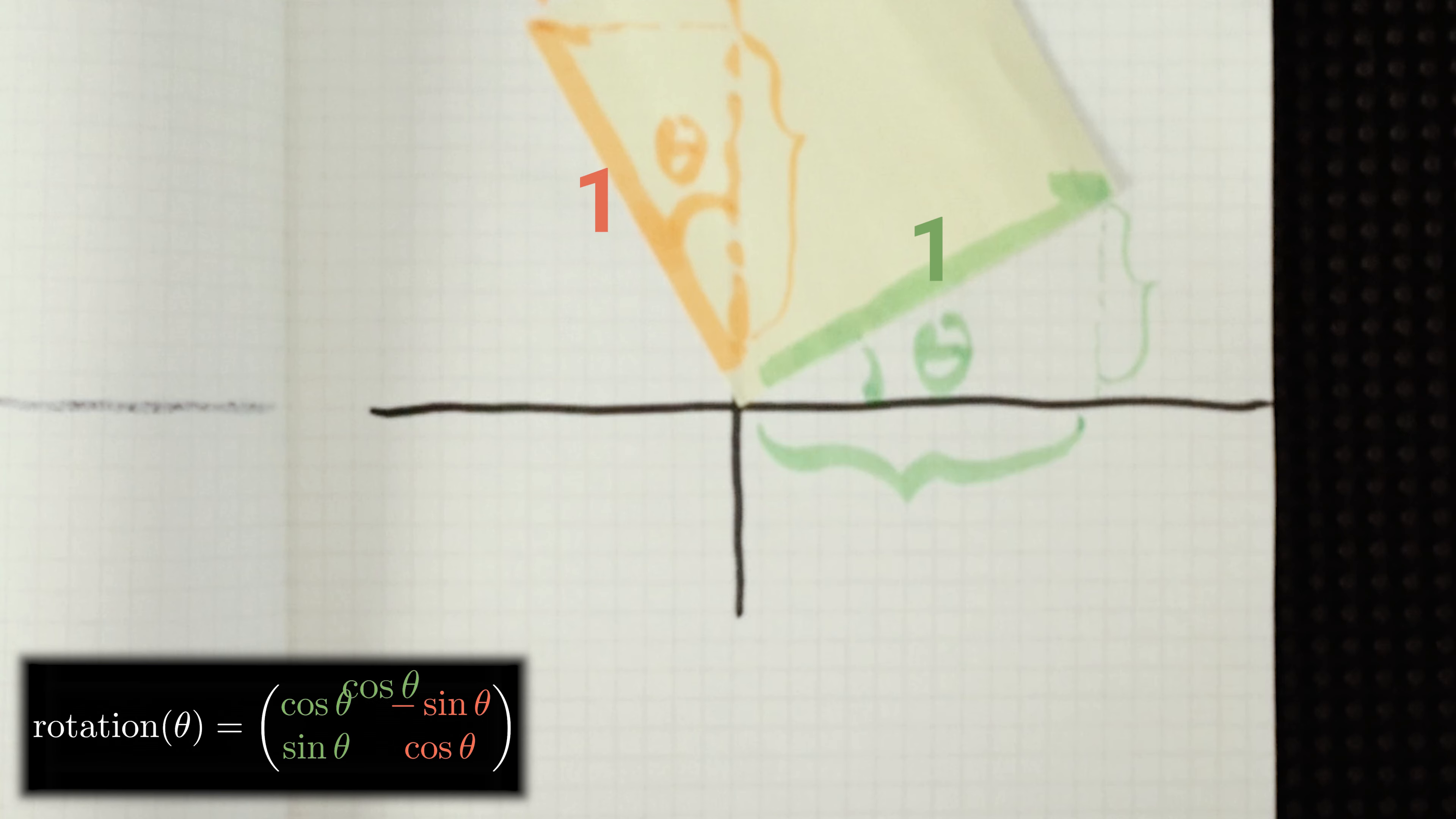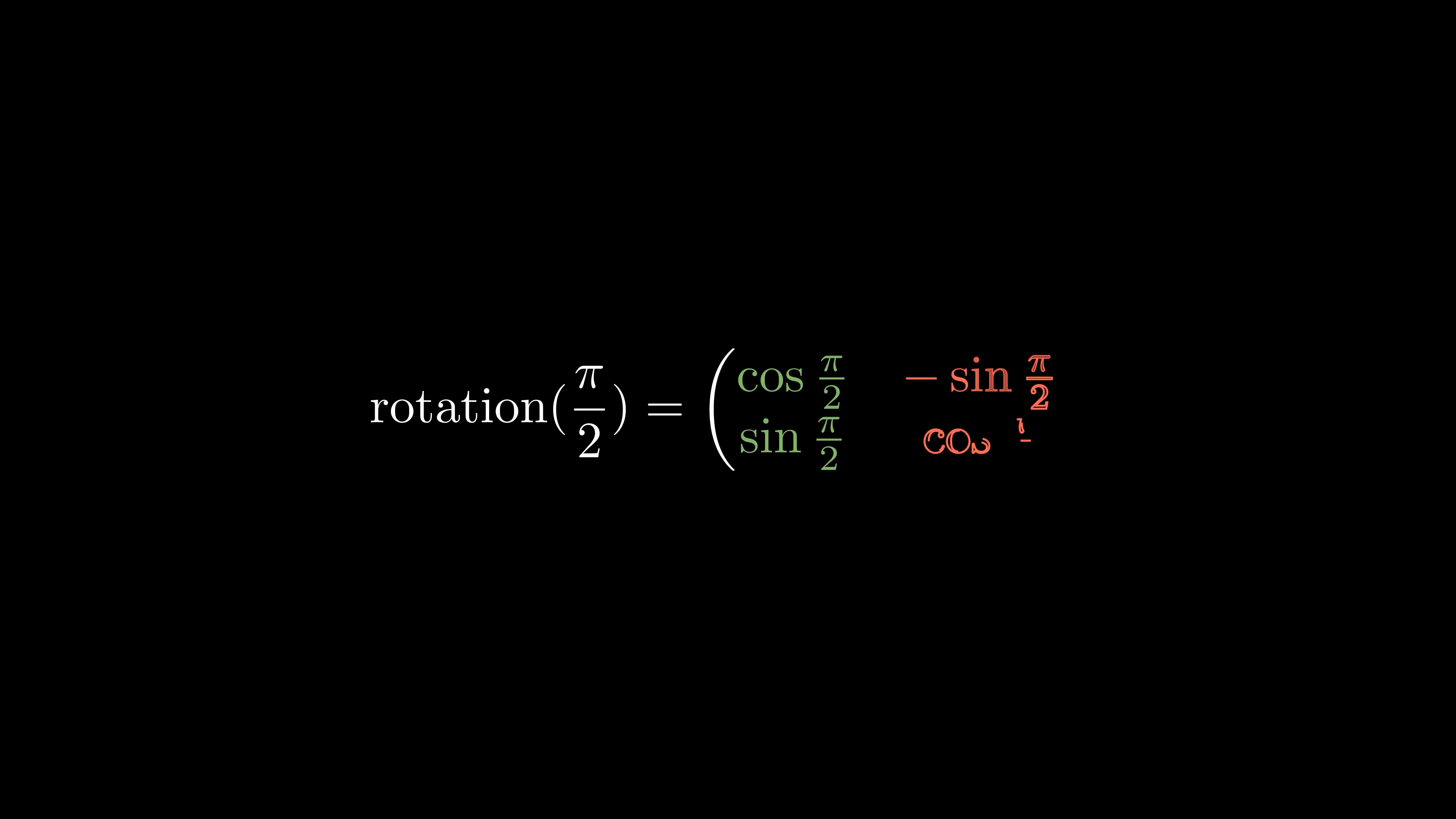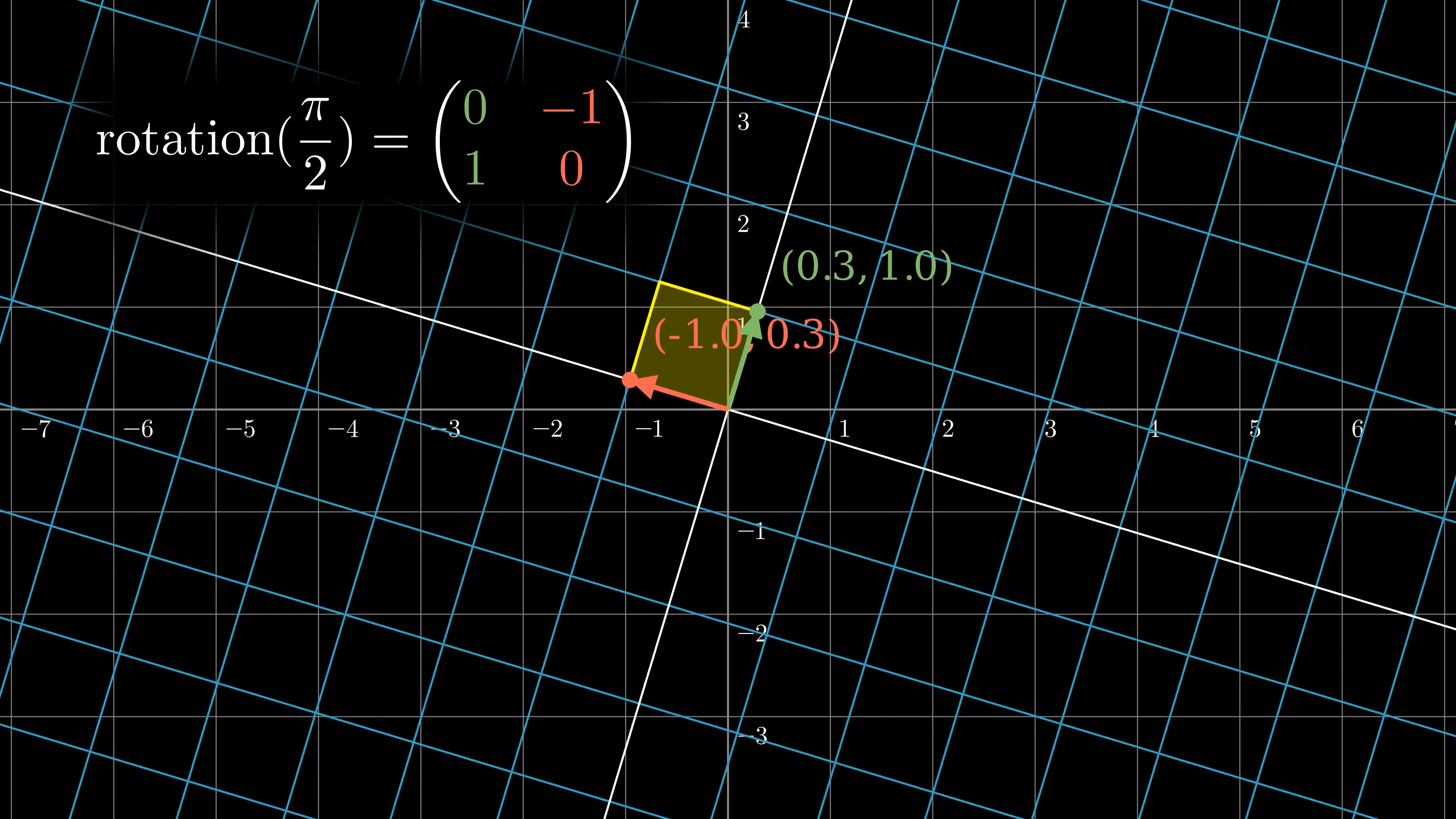The new x of the x basis is cosine theta, and the new y of the x basis is sine theta. For the y basis vector, it's pretty much the same, just notice the negative sign of it. A counterclockwise rotation with 90 degrees will be like this.